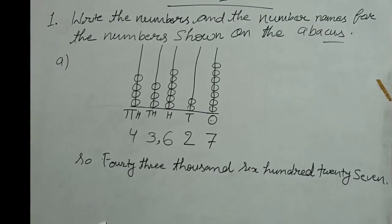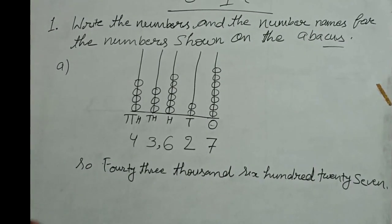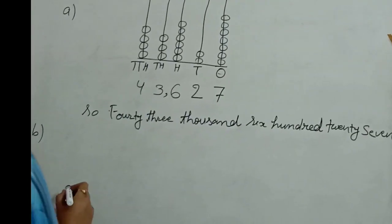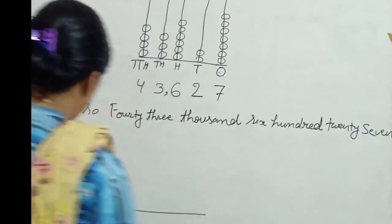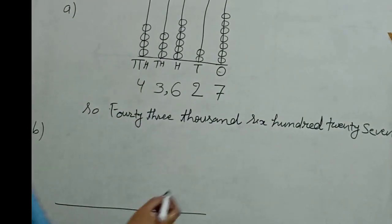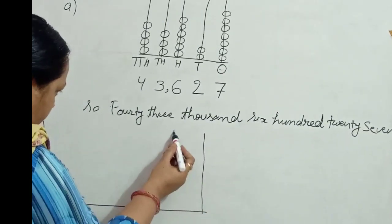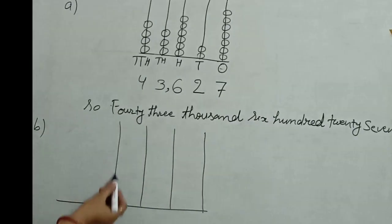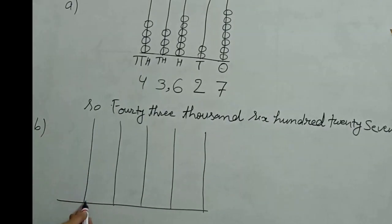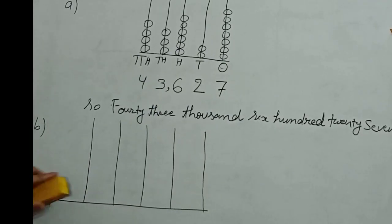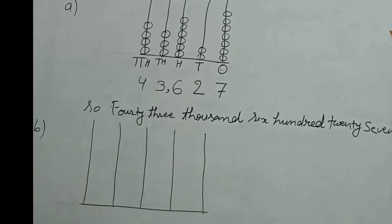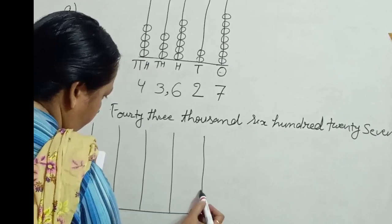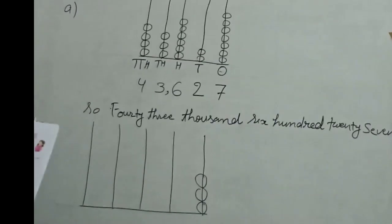Now we see the second abacus, question B. Here we have 1, 2, 3, 4, 5 - five sticks are given. And 3 pearls sitting on this stick.